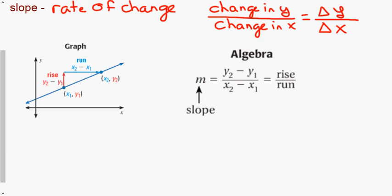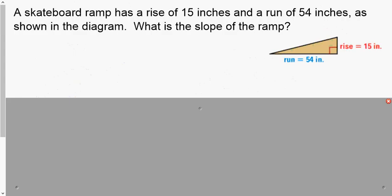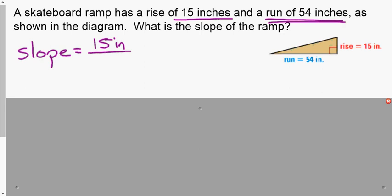For a word problem: a skateboard ramp has a rise of 15 inches and a run of 54 inches. What is the slope of the ramp? Slope equals rise over run, which is 15 inches over 54 inches.